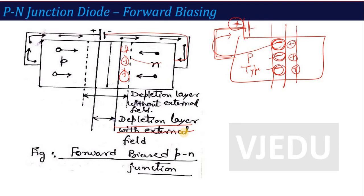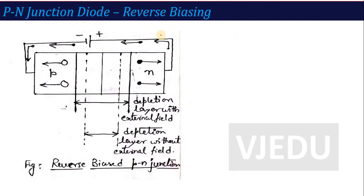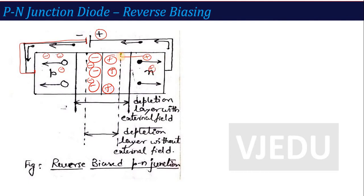Now think about the opposite — reverse biasing. If you connect the p-type semiconductor to the negative terminal of the battery, the negative battery repels the negative immobile ions, adding to the junction potential. Similarly, the positive battery repels the donor ions on the n-side. So the net negative and positive charge at the junction increases, meaning the potential barrier increases and the depletion layer increases when external battery is applied in reverse bias. Important: forward bias — depletion layer decreases; reverse bias — depletion layer increases.